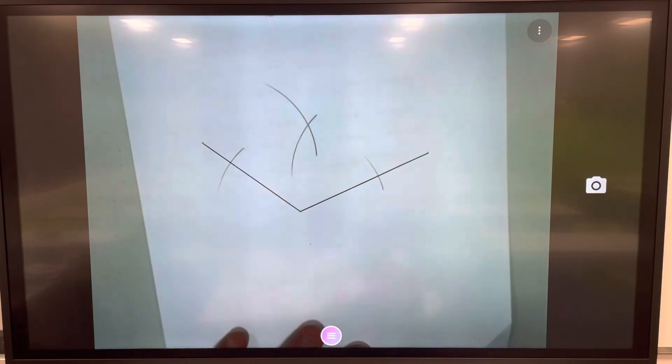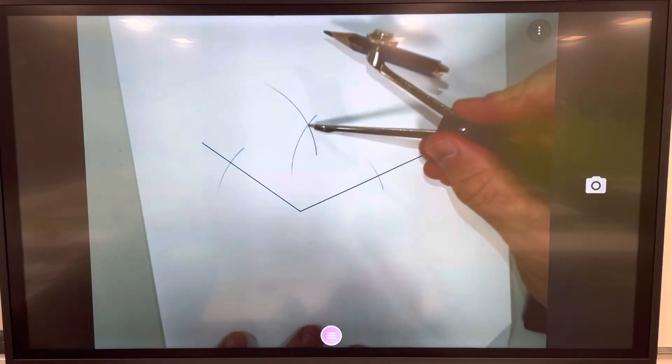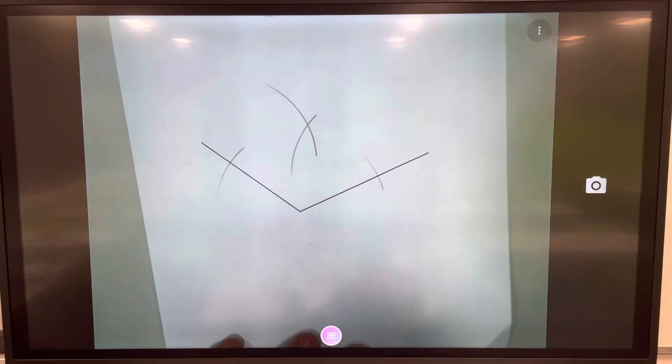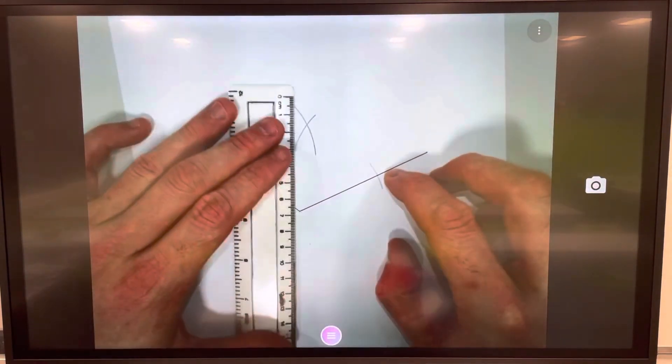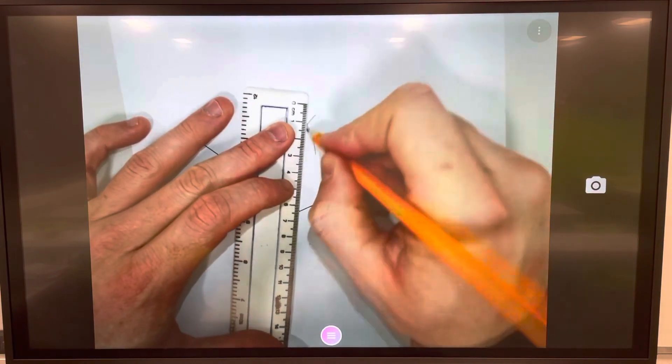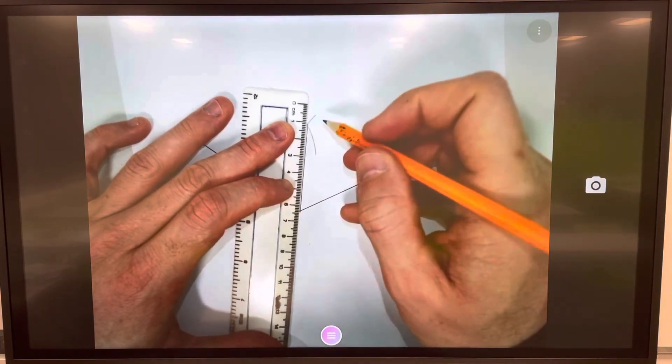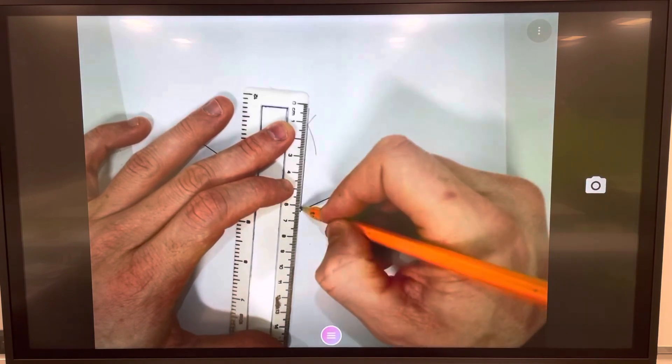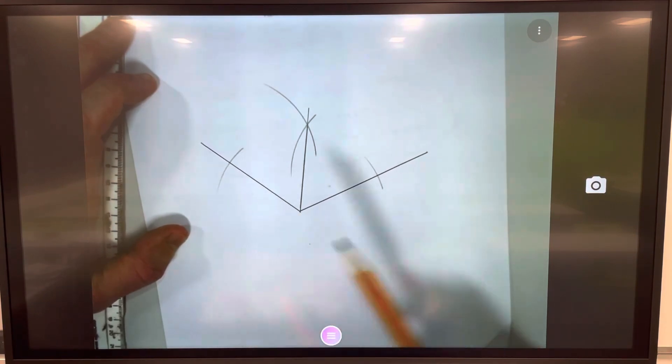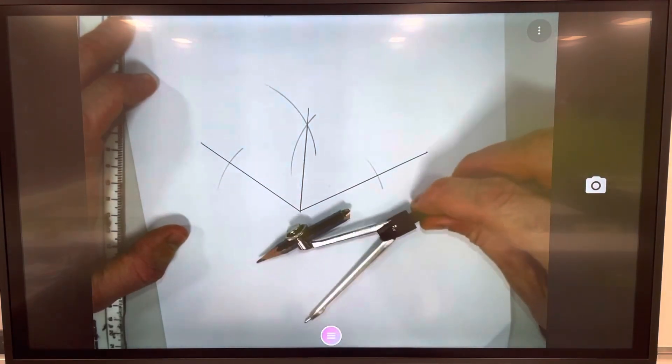You can clearly see now this point here is the middle of that angle. This point here, and then rotate it or draw the line all the way down. So you can see now this line is smack in the middle of this angle, so we have bisected it.